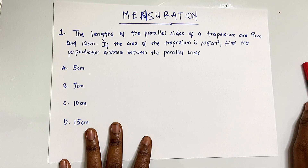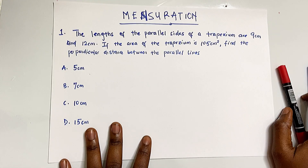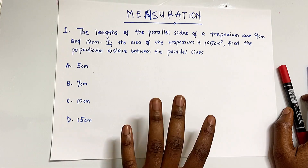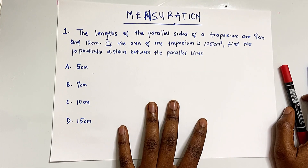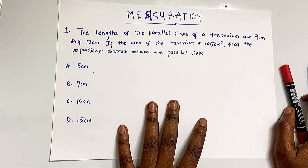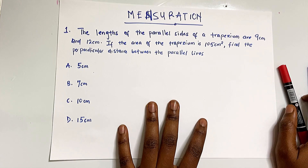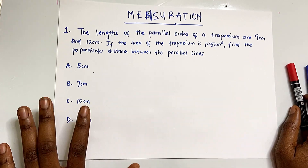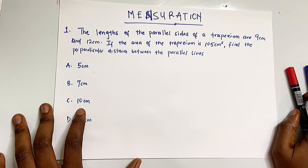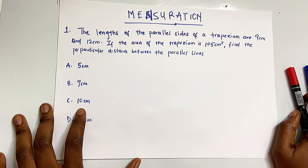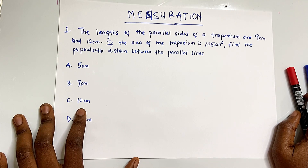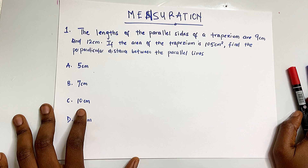Hi guys, welcome back. For the past couple of weeks I've been putting out some tutorial videos on past questions under various topics. In this video we're going to be solving some questions under mensuration — this topic is all about length, perimeters, areas, and volumes of shapes.